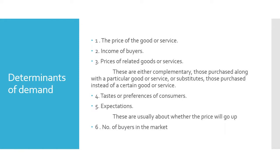The third determinant is the price of related goods or services. A related good may be a complementary good or a substitute. In the case of a complementary good, when price increases the demand for the product decreases. In the case of a substitute, the reaction is opposite — demand increases if the price of the substitute increases. The fourth determinant is the taste or preferences of consumers: when people's desire for a product increases, demand also increases.